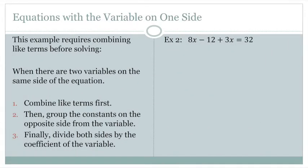With this second example, we're still looking at an equation where the variables are on one side of the equal sign. Here's our equal sign, and we see we have two instances of the same variable x. When there are two variables on the same side, we want to combine them first as long as they're like terms.